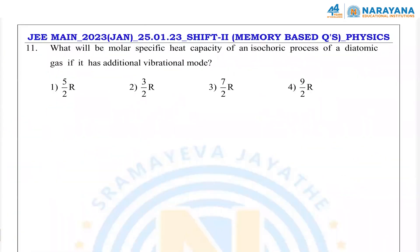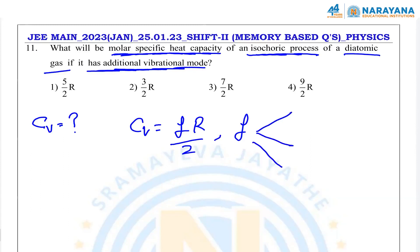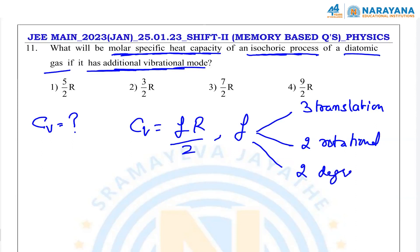Next question: molar specific heat capacity Cv for an isochoric process of a diatomic gas with vibrational modes included. Cv = fR/2. A diatomic gas has 3 translational, 2 rotational, and 2 vibrational degrees of freedom (each vibrational mode contributes 2), totaling f = 7. So Cv = 7R/2. Answer is option 3.